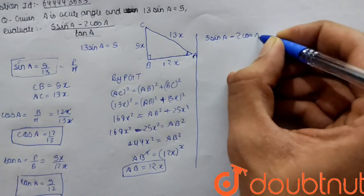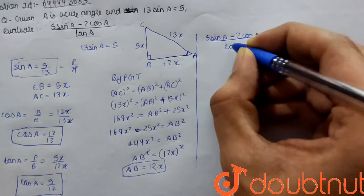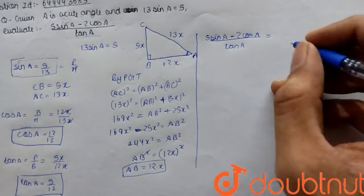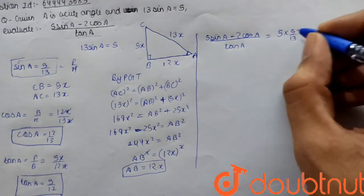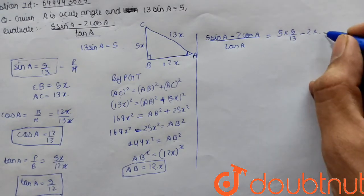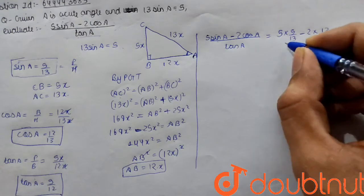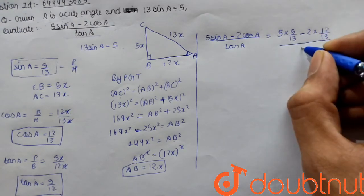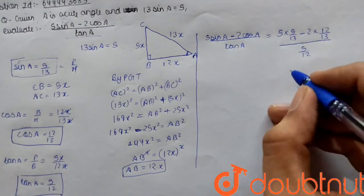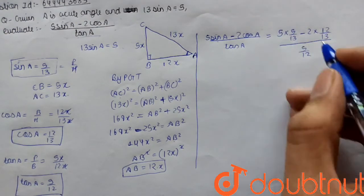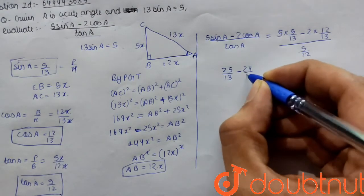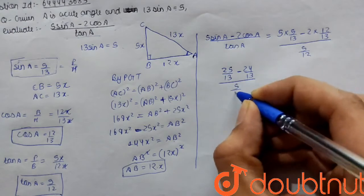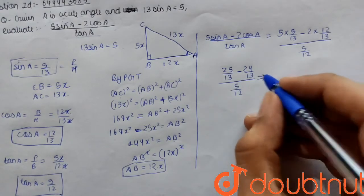Now evaluating the expression: 5 sin A minus 2 cos A, all divided by tan A. Substituting: 5 into 5/13 minus 2 into 12/13, all divided by tan A which is 5/12. This gives 25/13 minus 24/13, all divided by 5/12.